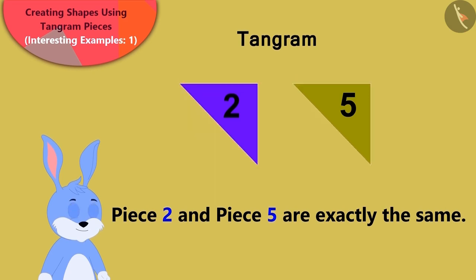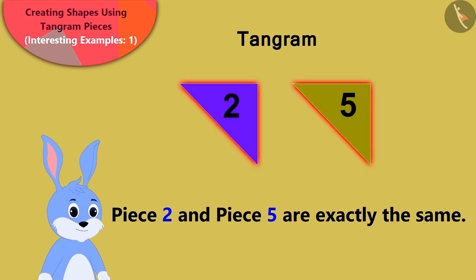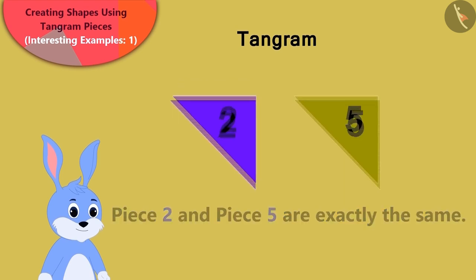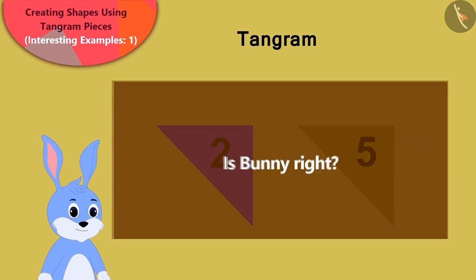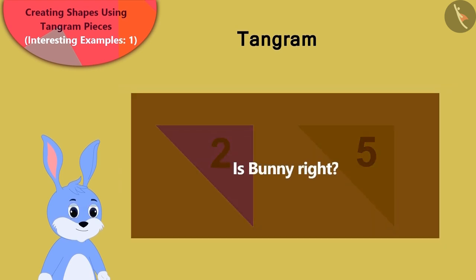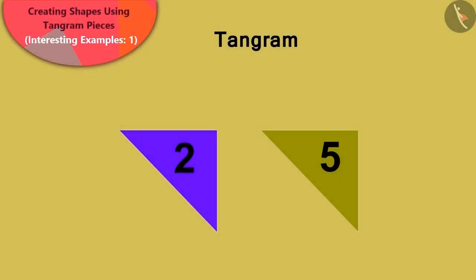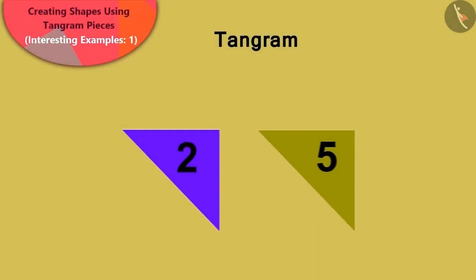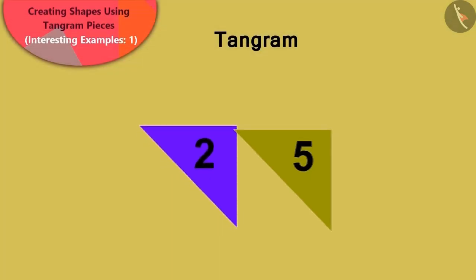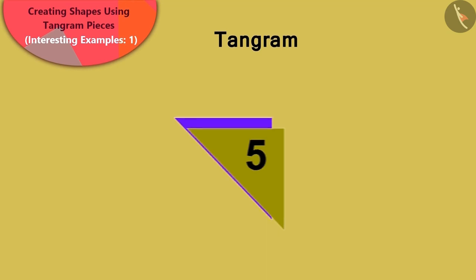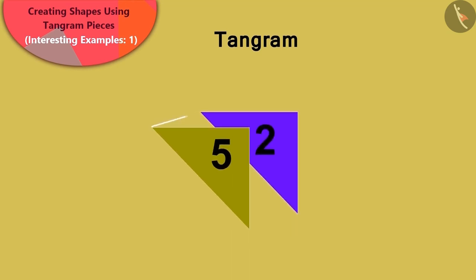Children, is Bunny right? Yes! If we take the triangular pieces number two and number five and pile them one on top of the other, then we will see that they are absolutely similar.